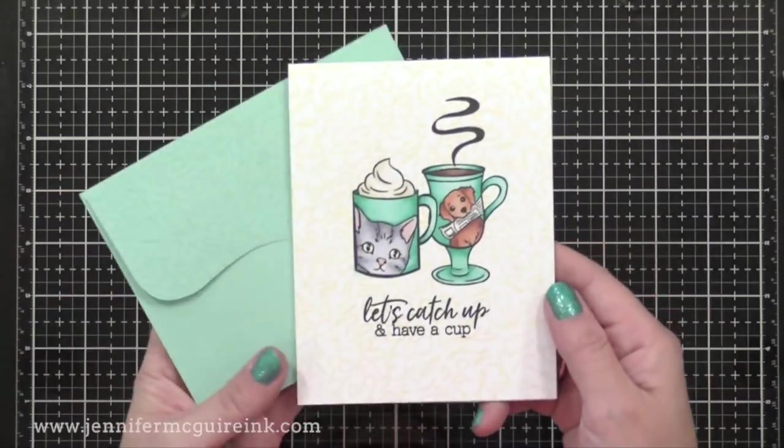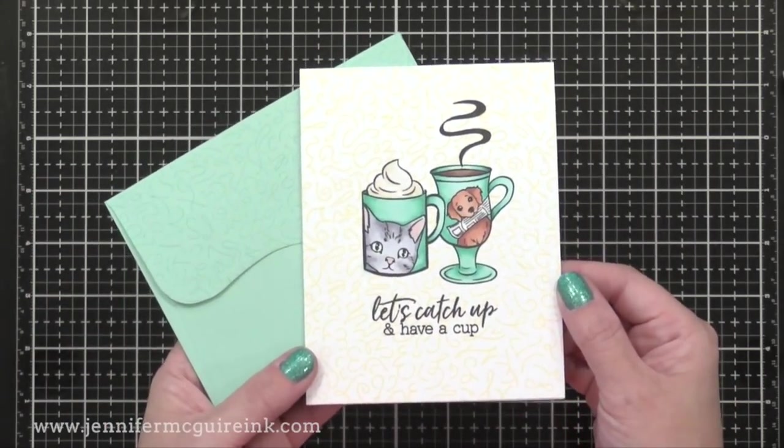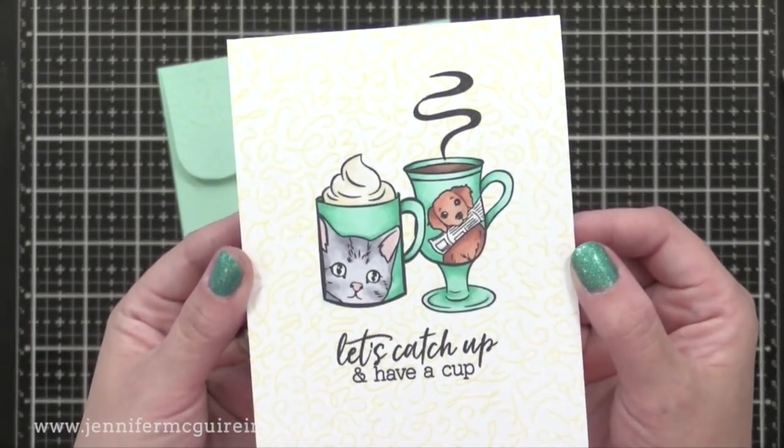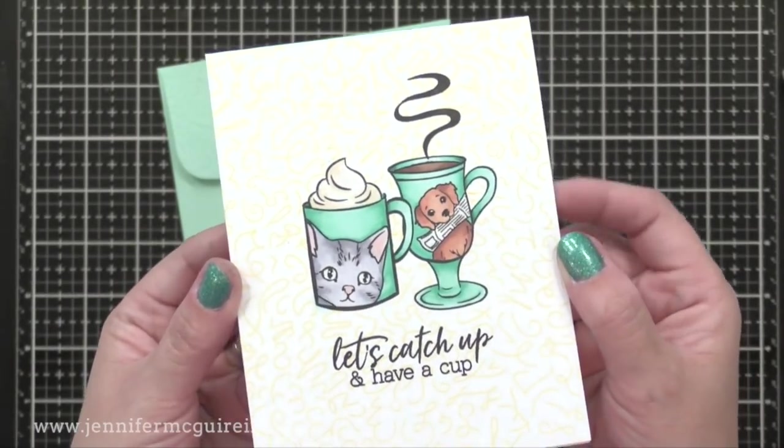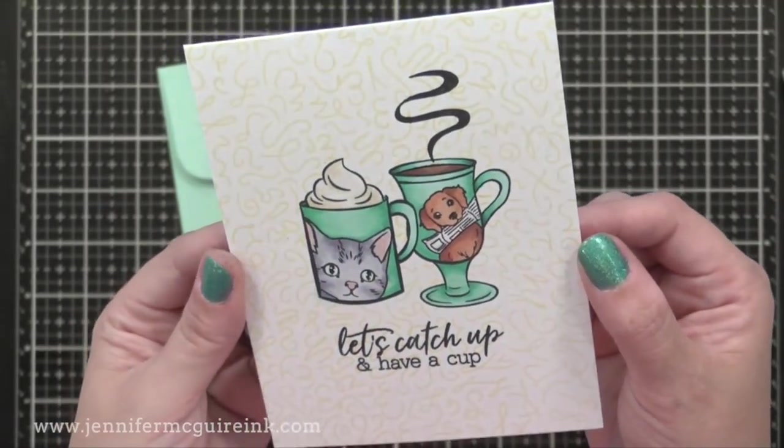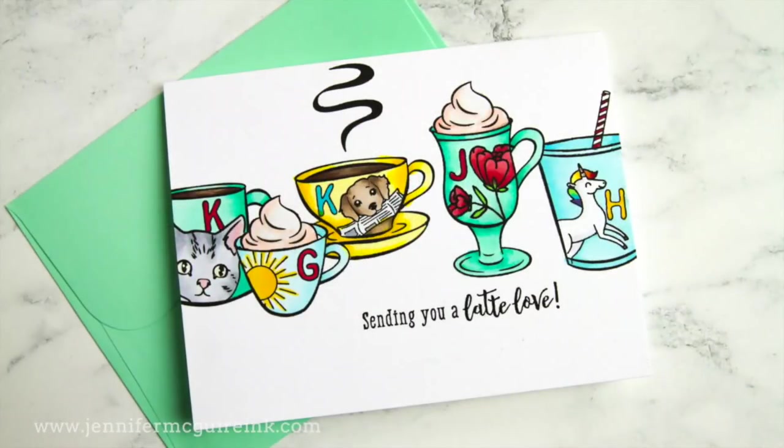So I added some basic Copic coloring to the mugs. And here you can see the completed card. I also stamped the background stamp on the flap of the envelope so that it would match. So I took those basic cup images and added something fun to them. So look at your stamps. Look at any outline images you may have. You may be able to personalize them by combining them with other stamps and masking.